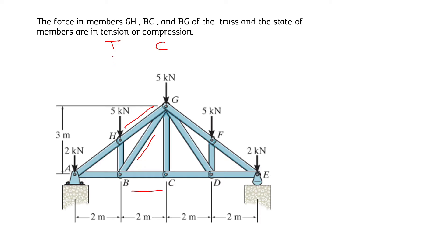Before that, let's understand the reaction support forces at the supports. There is a support at point A and at point E. At point A, there will be a vertical reaction Ay and a horizontal reaction Ax, because it is a pin support. At point E, there will be only one reaction component, Ey, because point E is a roller support.